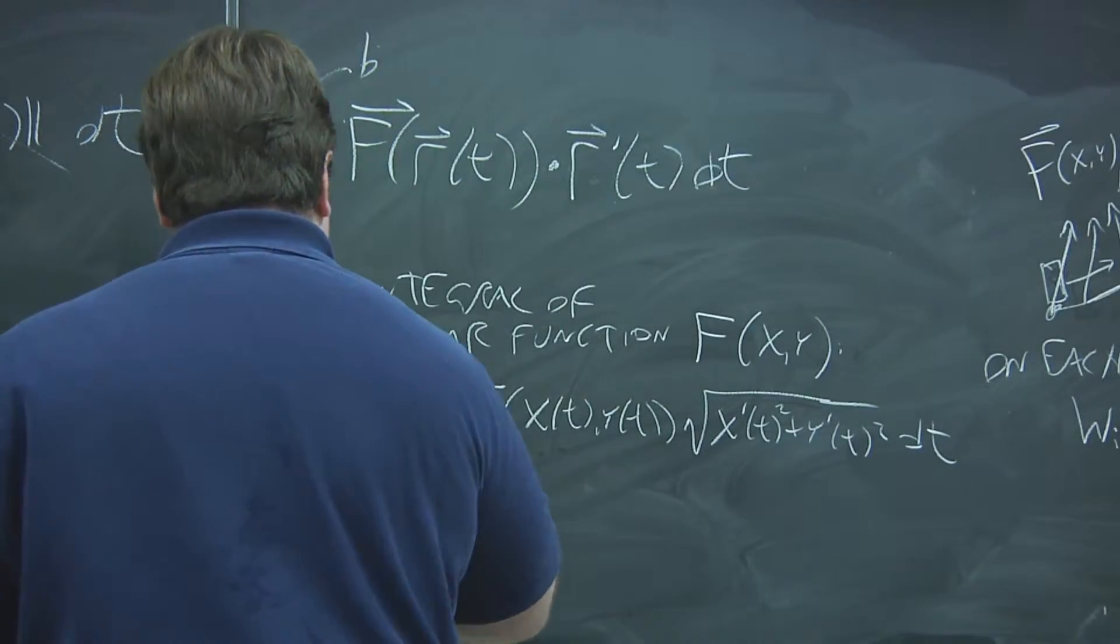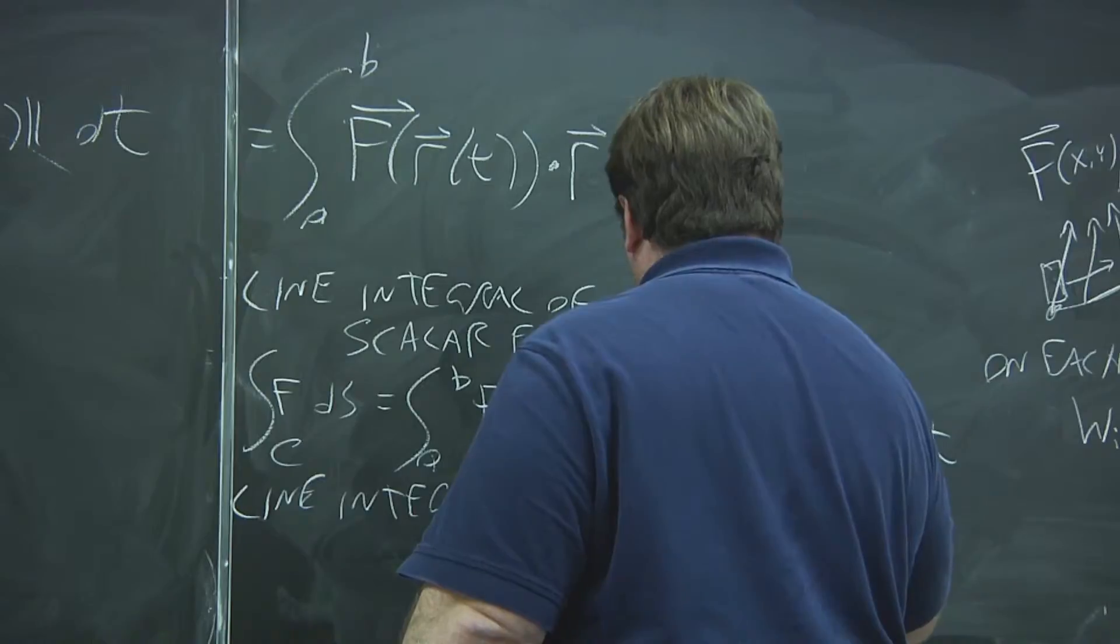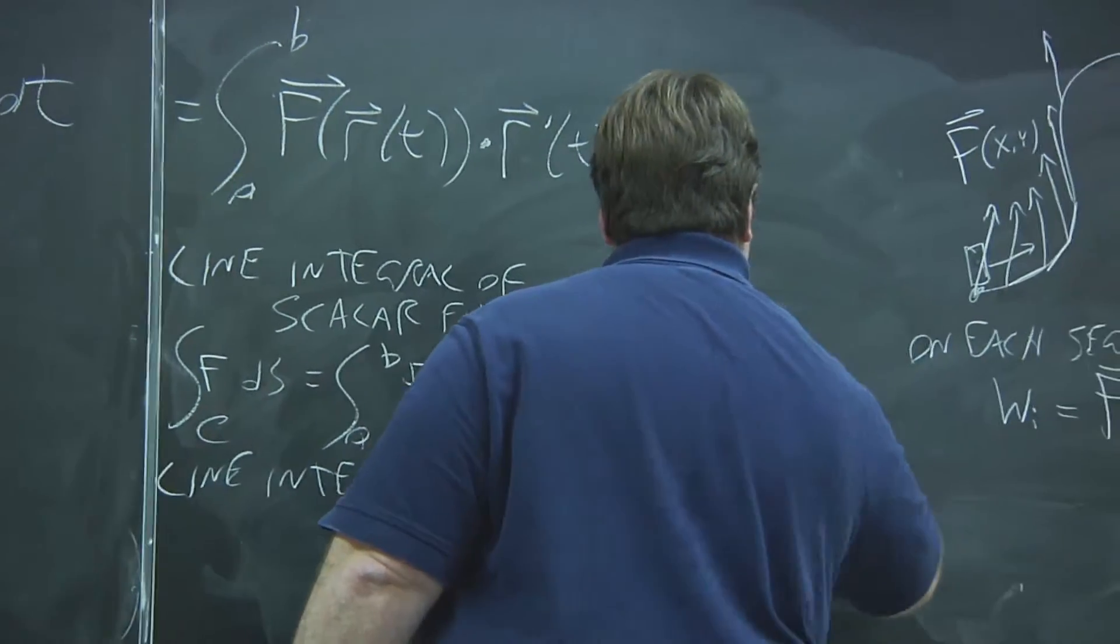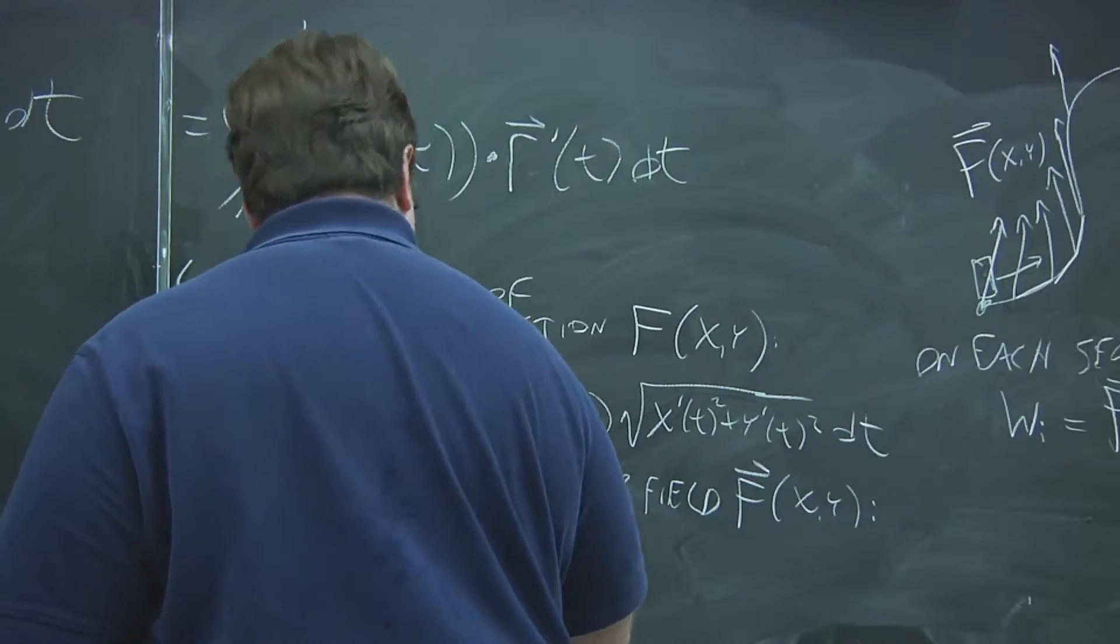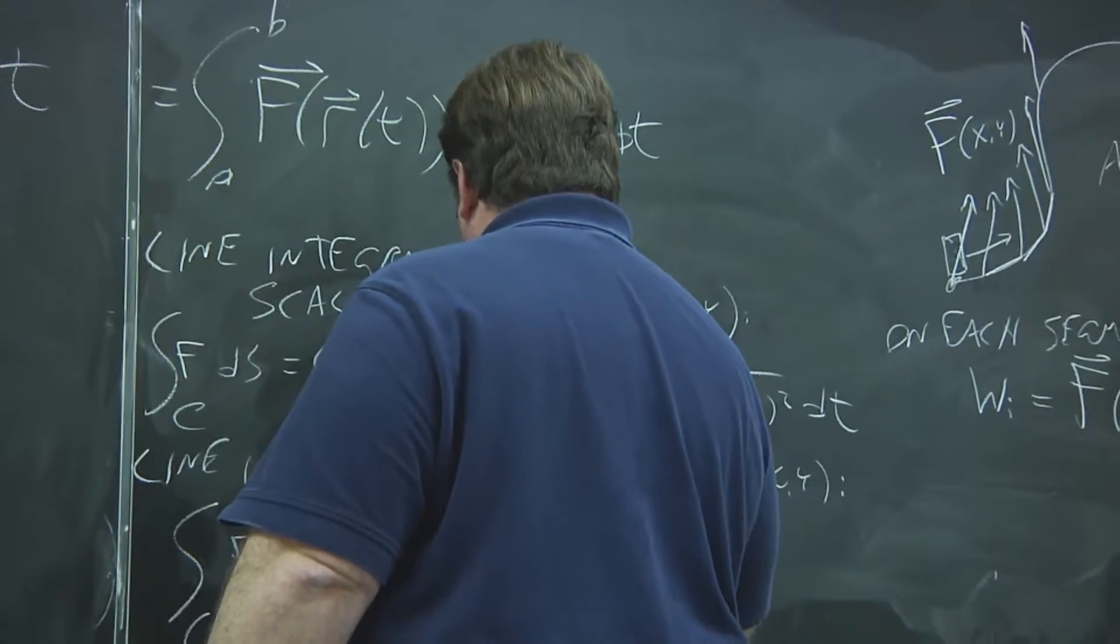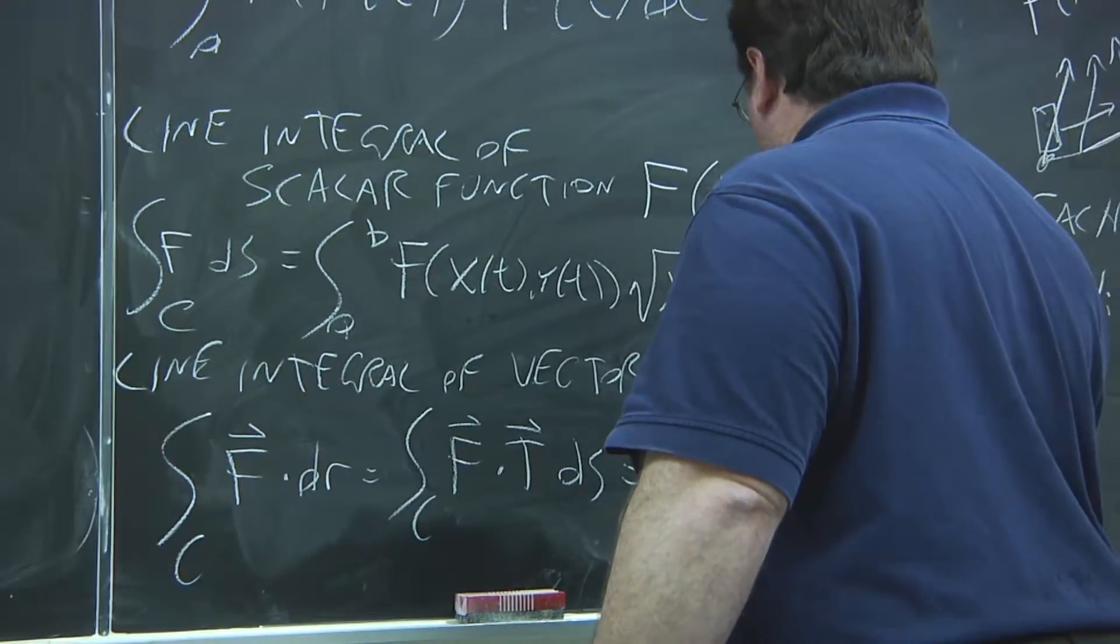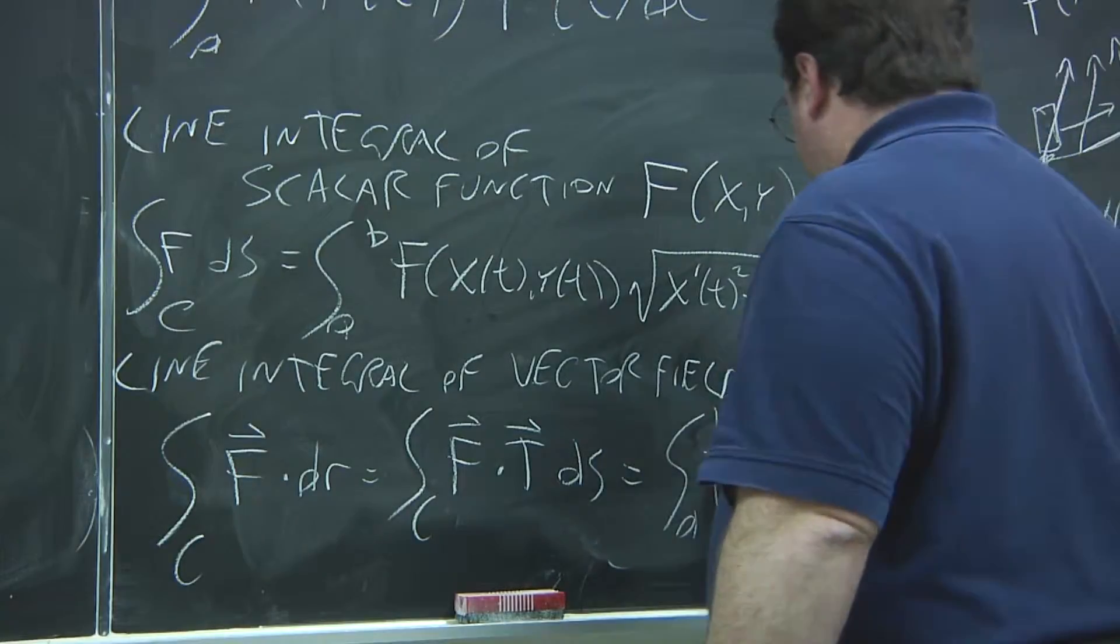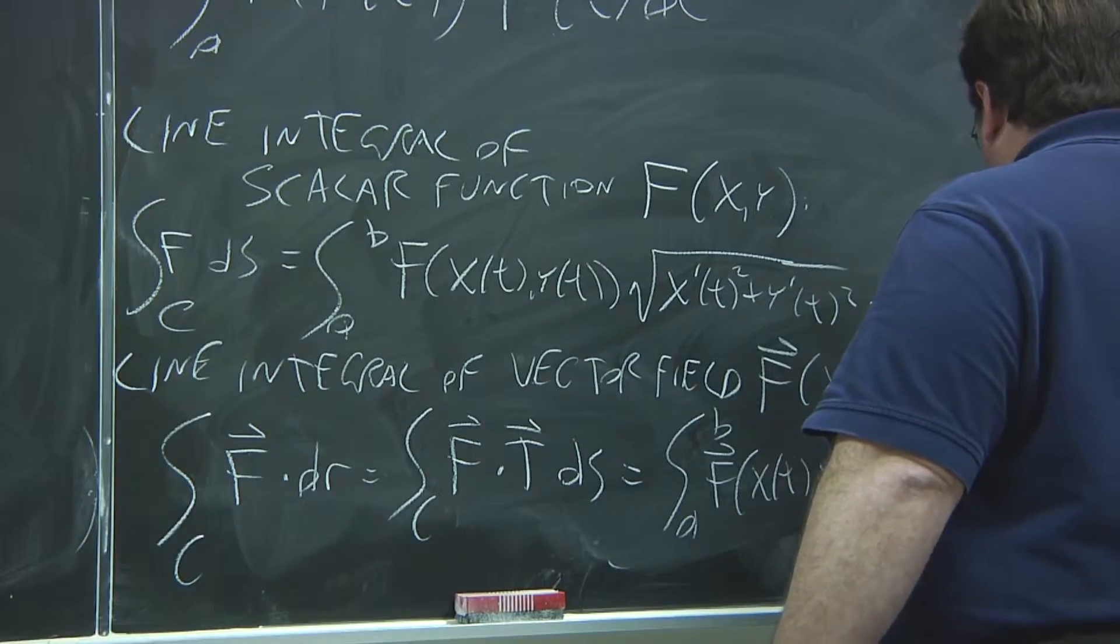Whereas, if you have a line integral of a vector field, then what you're really doing is you're integrating this dot product of a vector field with a tangent vector. So it's going to be integral from a to b, f of x of t, y of t, dot product with x prime of t, y prime of t, dt.